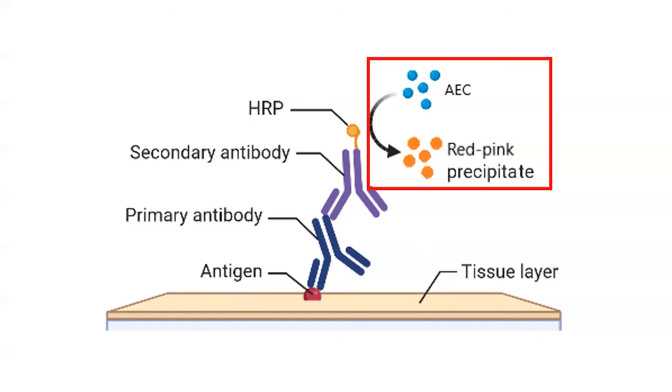And enzymes can be harnessed in order to create reactions. So in this case, the reaction is taking this chemical called AEC for short, that is relatively invisible by itself, floating around a solution, doesn't really stick to anything. What will happen is that this enzyme will start converting this into an active, sticky form. In this case, it says red-pink precipitate. And so what that means is that this colorless chemical now becomes colored and sticky and will stick to all the surrounding area where the antigen is.